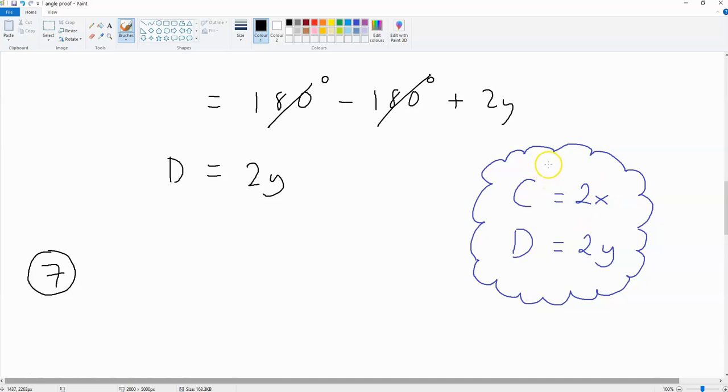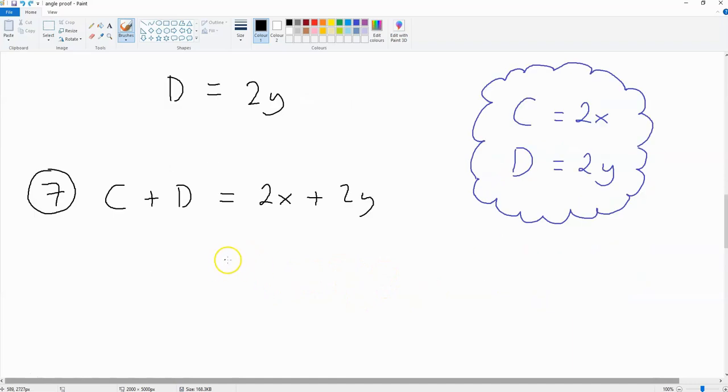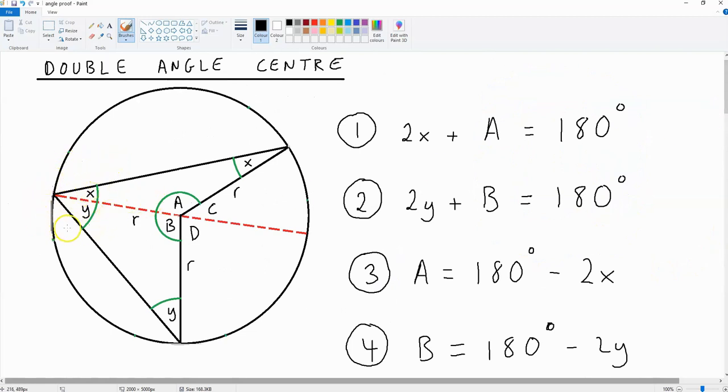Now, we've established that c is equal to 2x and that d is equal to 2y. So, what is c plus d? C plus d is going to be equal to 2x plus 2y. And this is equal to 2 times x plus y. And we have our proof. This is because 2 times x plus y is double the angle of this apex up here. Therefore, we've proven that c plus d is equal to 2 times x plus y. And we've finalised our proof.